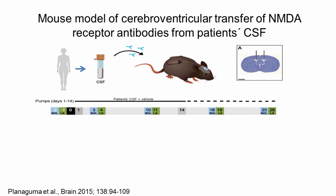To test if this drug could be potentially useful for this disease, we used our animal model of passive transfer of patient CSF antibodies using osmotic pumps connected to a cerebral ventricular system of mice. During 14 days, the CSF is infused in the ventricular system, and during 26 days these animals are followed and memory and other behaviors are recorded.